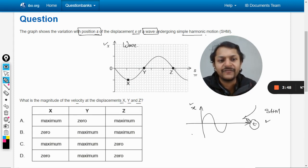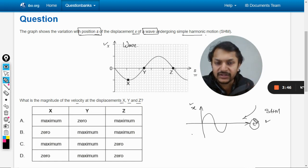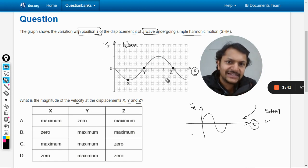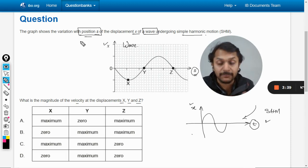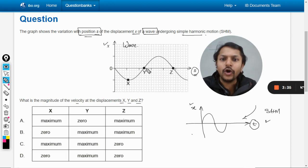But here, the first thing that should come to our mind is that on the x-axis we have position, we do not have time. So the position is variable, which means we are talking about different particles. Like X is a different particle, Y is a different particle, Z is a different particle.